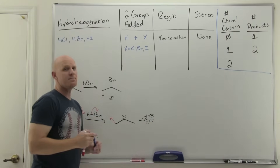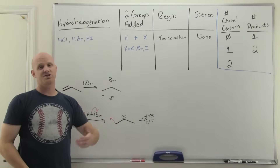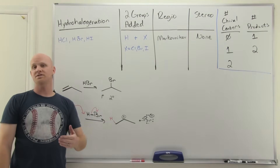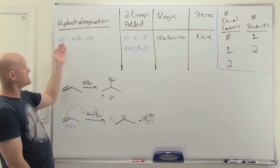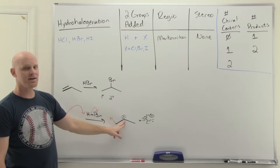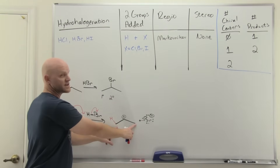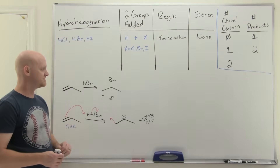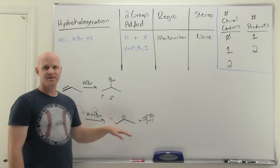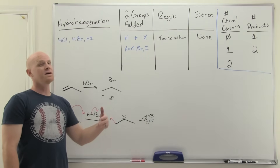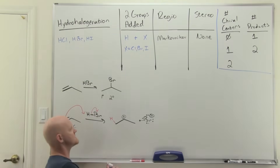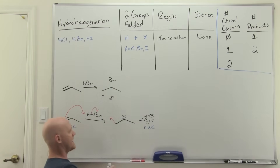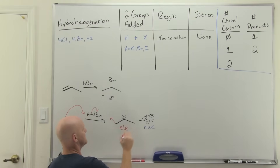Because we formed a carbocation, you typically need to check for rearrangements. It turns out only three alkene reactions form a carbocation and are subject to rearrangements, and hydrohalogenation is one of them whether you use HCl, HBr, or HI. In this case we have a secondary carbocation; the two adjacent carbons are both primary, so moving to them would not produce a more stable carbocation — there is no favorable rearrangement here.